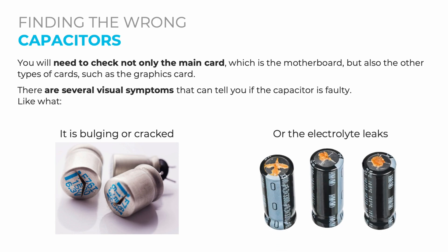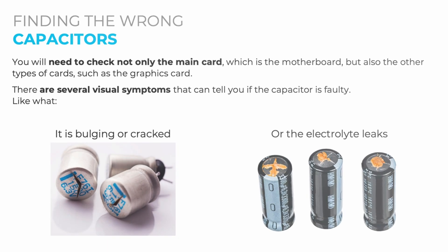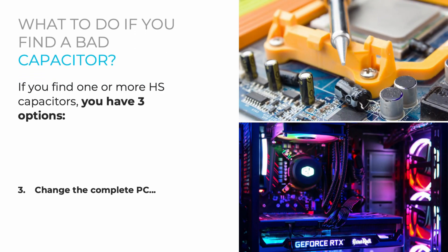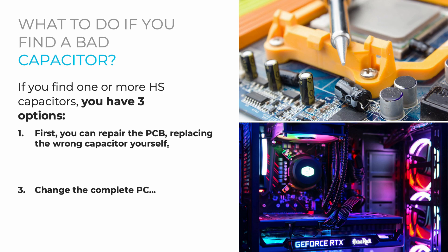If you find one or more faulty capacitors, you have three options: repair the circuit board by replacing the bad capacitor yourself; completely replace the printed circuit board to prevent other capacitors from failing one by one, which is more judicious; or, if the capacitors are on the motherboard, consider replacing the entire PC.